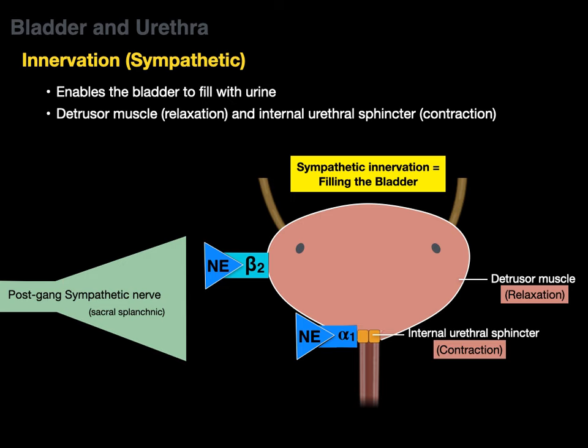The contraction of the internal urethral sphincter during sympathetic activation is also what prevents retrograde ejaculation of semen into the bladder during ejaculation in the male urethra — ensuring semen continues out through the urethra.